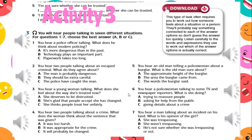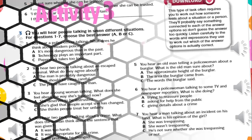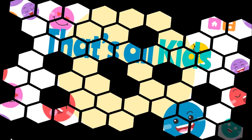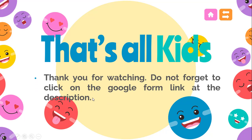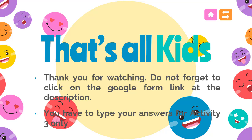That's the end of Activity 3. I will provide the link below the description and you have to key in your answers together with your name and class. Let's check who can get all correct. That's all — thank you for watching. Don't forget to click on the Google Form link in the description and type your answers for Activity 3 only. The rest of the activities are for you to practice. That's the end of the session — hope to see you again, take care and be safe.